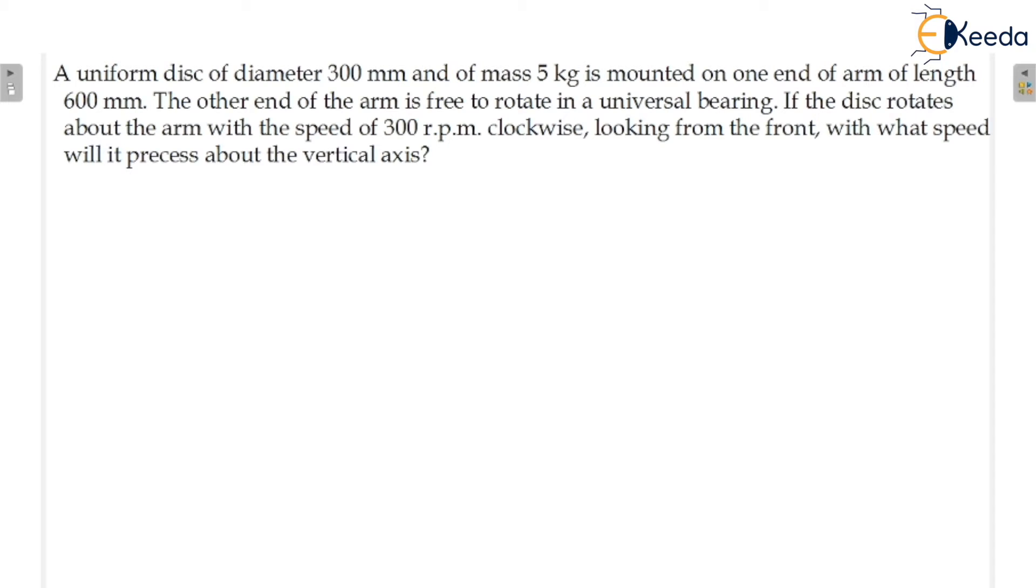So this is the problem of gyroscopic couple. We know that mass moment of inertia of the disc about the axis through its center of gravity and perpendicular to the plane of the disc is mr²/2. The mass is given and the radius diameter is given. So diameter would be 0.15 in meter, mr²/2. So you can calculate it would come out to be 0.056 kg·m². So this is the mass moment of inertia.